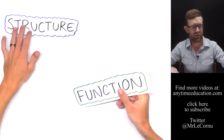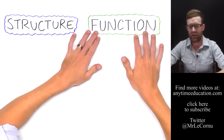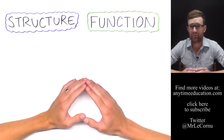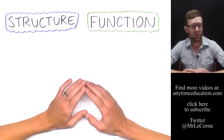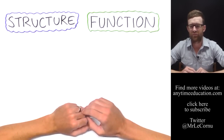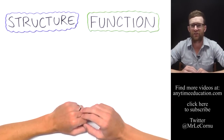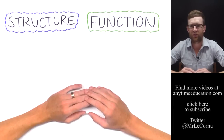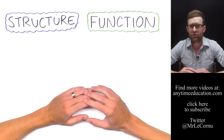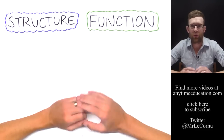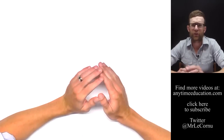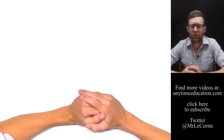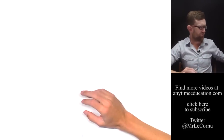You would have been hearing the terms structure and function — they are critical terms in biology. When we look at the main organelles in this video, I'm going to highlight the structure and the function of each of them. If you're unsure about the differences between those terms, check out the video on structure and function. We're going to focus on six of the main organelles within eukaryotic cells.